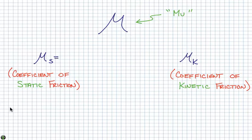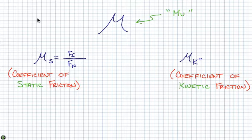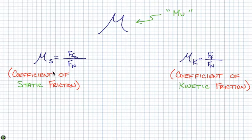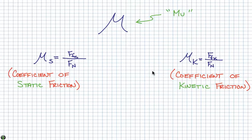Let's take a look at the static coefficient of friction — it's actually just a ratio. Mu, or the coefficient of friction, is just the ratio of the force of friction to the normal force. It's the same equation for the kinetic coefficient of friction — it's the ratio of the frictional force to the normal force. The difference is: for the static coefficient of friction, it's the static frictional force, and for the kinetic coefficient of friction, it's the kinetic force. So the amount of friction statically that you must overcome to move the object, and the amount of friction kinetically that resists the object that is currently in motion.